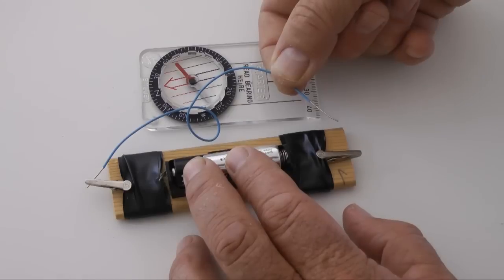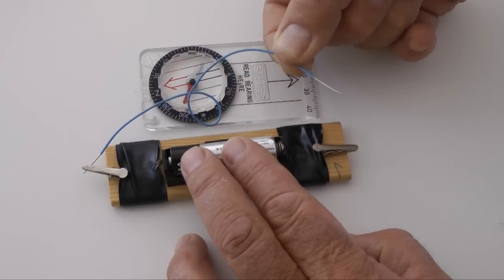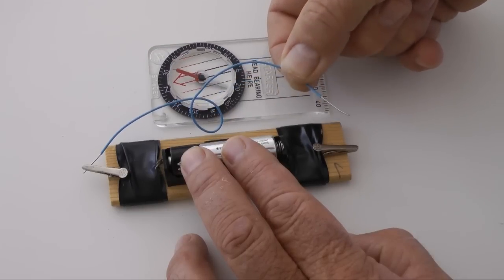Electromagnetic fields are created when electricity flows in a conductor. The magnetic needle in this compass moves when the metal wire is connected to a battery, revealing the presence of a magnetic field.